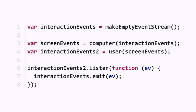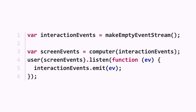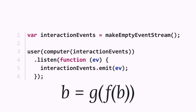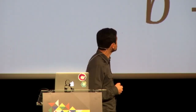In JavaScript this means listening to whatever happens on the second interaction events and forwarding it to the first. We can simplify this code by getting rid of intermediate variables — no magic. We can do that again with screen events. Now you can see something that looks like a fixed point: B corresponds to interaction events, and G of F corresponds to user composed with computer. It's solved — it wasn't that hard after all.